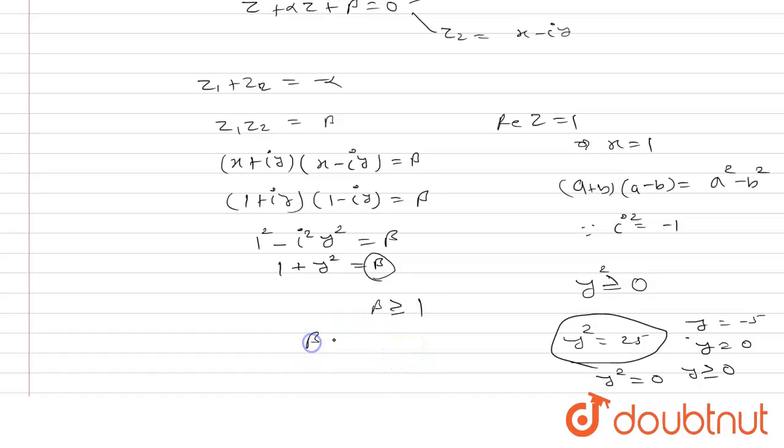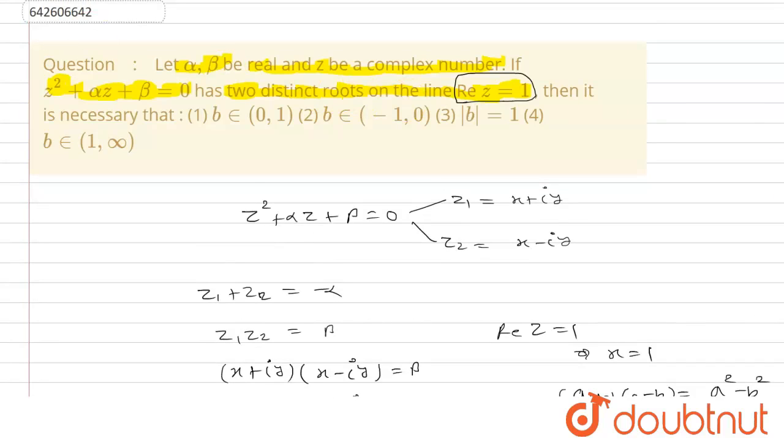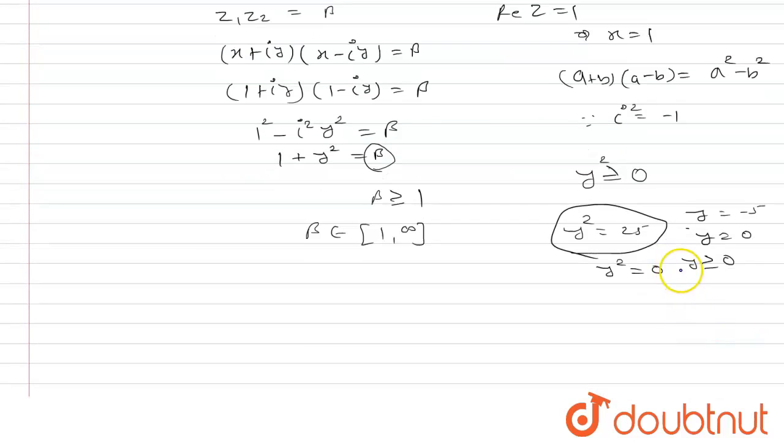So that means beta belongs to 1 to infinity. But according to question, the question is saying that it has two distinct roots. If y equals 0, that means the root x plus iota y and x minus iota y, that means z1 will equal z2. But it has two distinct roots. That means y is not possible to 0.